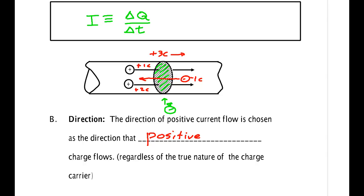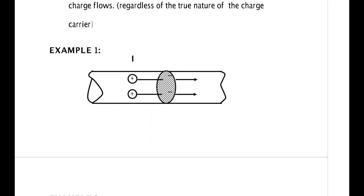So let me show you that. We have two examples here. One is this example where we have some positive charges and they're going this way. Then the current, I, goes in that direction. That's the direction of positive current.